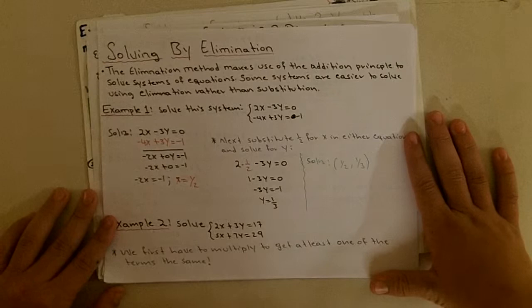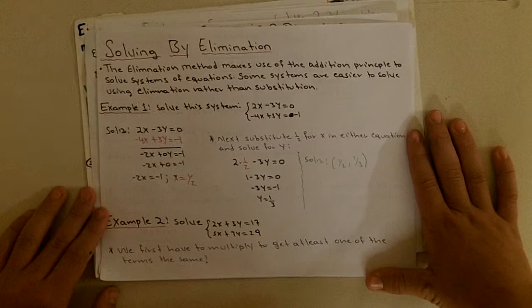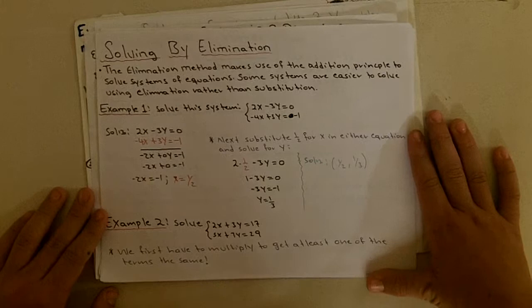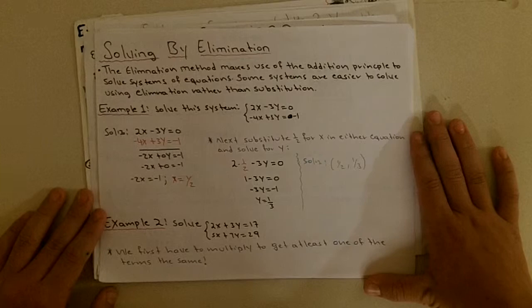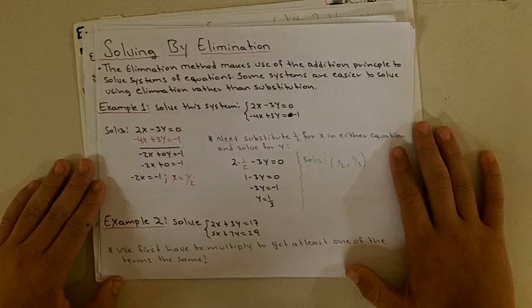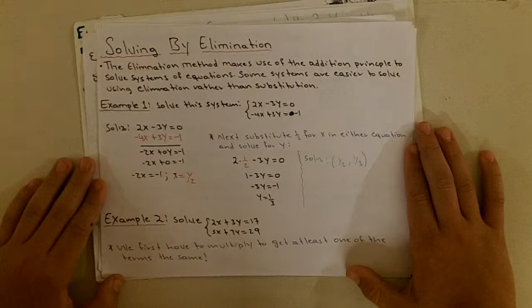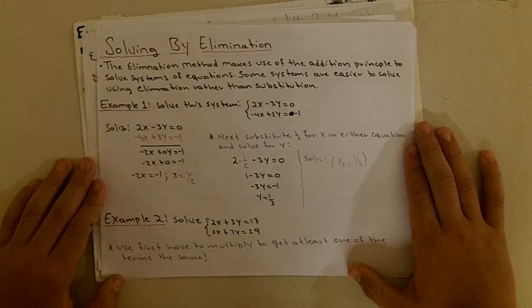Solving by elimination: the elimination method uses the addition principle to solve systems. Some systems are easier to solve using elimination rather than substitution. For example, 2x minus 3y equals 0 and negative 4x plus 3y equals negative 1. Since 3y and negative 3y are opposites, adding the equations gives negative 2x equals negative 1, so x equals 1/2. Substituting back: 2 times 1/2 minus 3y equals 0 gives y equals 1/3.